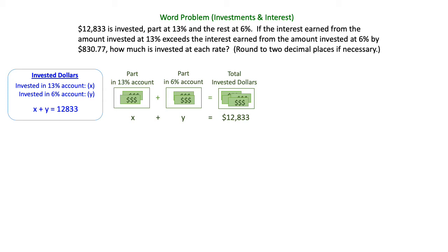That's only invested dollars. Now let's take a look at the interest. The problem says that the interest earned from the amount invested at 13% exceeds the interest earned from the amount invested at 6% by $830.77.